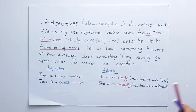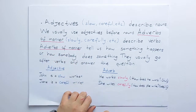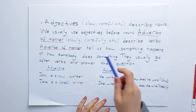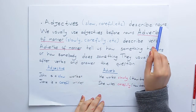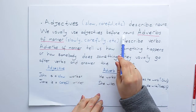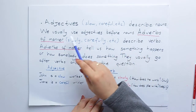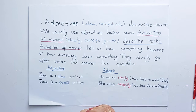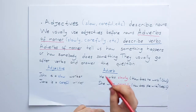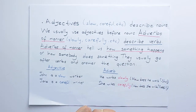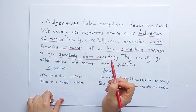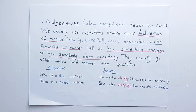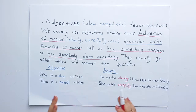Let's look at the difference between adjectives and adverbs. Firstly, adjectives describe nouns. We usually use adjectives before nouns. But adverbs of manner describe verbs. Adverbs of manner tell us how something happens, or how somebody does something. They usually go after verbs and answer the question. Now we will understand easily when we look at the examples.